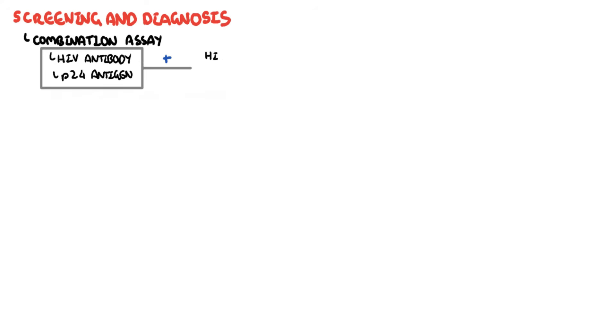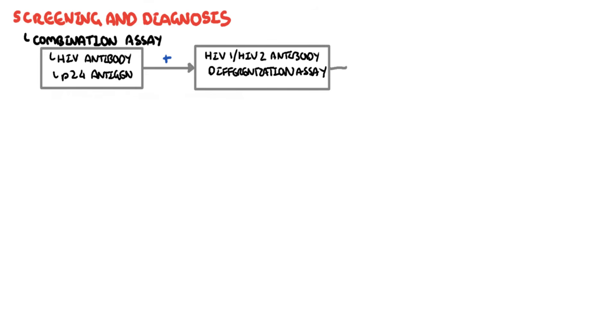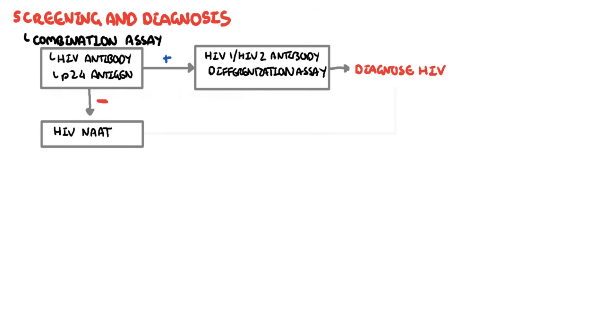Let's talk about screening and diagnosis of HIV. If you suspect someone has HIV, you can do a combination assay, which looks at the HIV antibody as well as the presence of the P24 antigen. If positive, you can do an antibody differentiation assay, which will tell you which type of HIV the person has — either HIV-1 or HIV-2. If the combination assay is negative, meaning there are no HIV antibodies present, you can check the HIV viral load by looking at the HIV RNA nucleic acid amplification test, or NAAT. If the viral load is positive, you can also diagnose HIV. If the viral load is negative, then this person does not have HIV at that particular time.